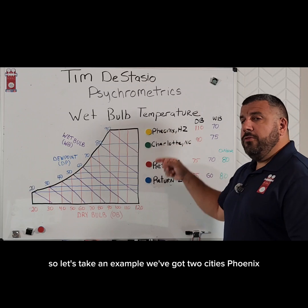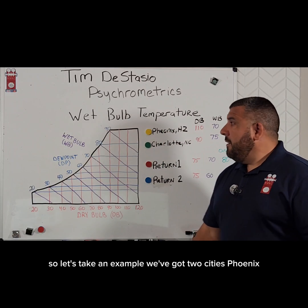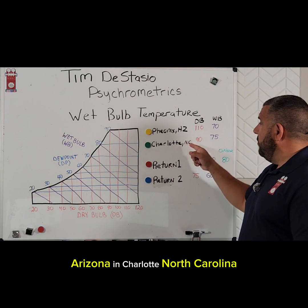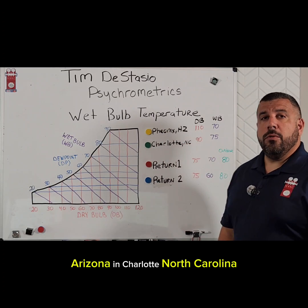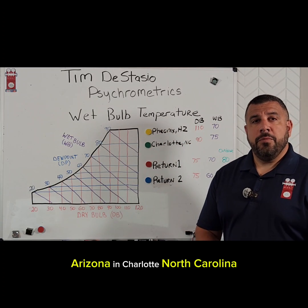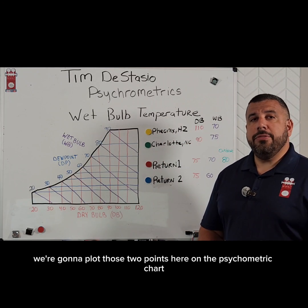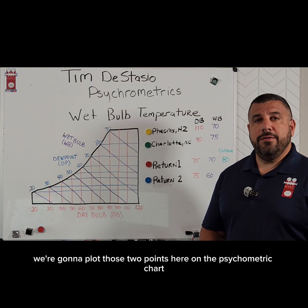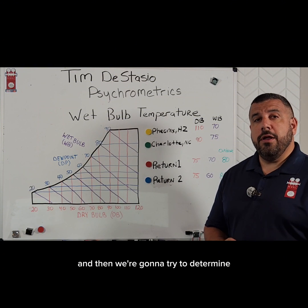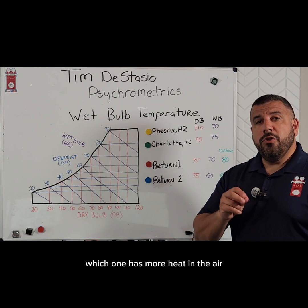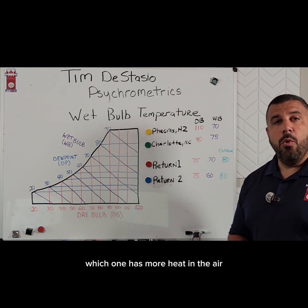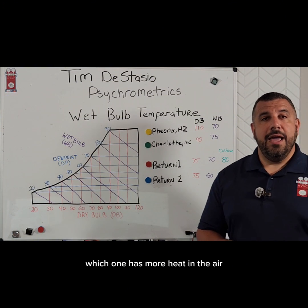We've got two cities — Phoenix, Arizona and Charlotte, North Carolina. We're going to plot those two points on the psychrometric chart and then try to determine which one has more heat in the air.